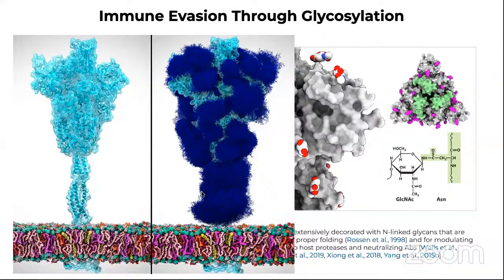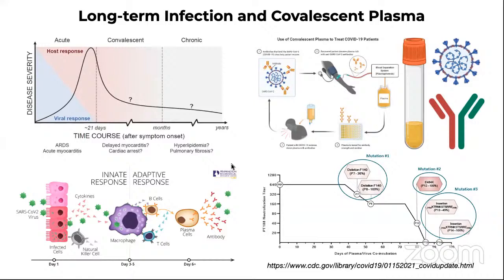Because of this glycan shielding, the specific receptor binding domain is critical not only for transmission and zoonotic events, but also as the target vaccines are developed against. The other studies Gus alluded to were done with convalescent plasma — plasma collected from patients who have already recovered. In the beginning there is an acute host response, then a long-term response. After recovery, that plasma can be collected and the antibodies used as a prophylactic or treatment.